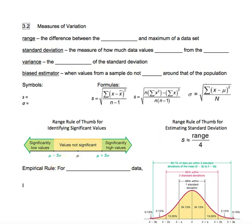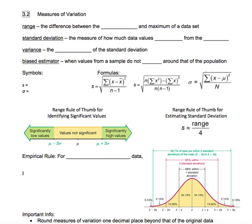In the first section of Chapter 3, we talked about measures of center, and now we are going to talk about measures of variation. A measure of variation is talking about how much the data varies, and there are several different measures of variation, just like we had several different measures of center.